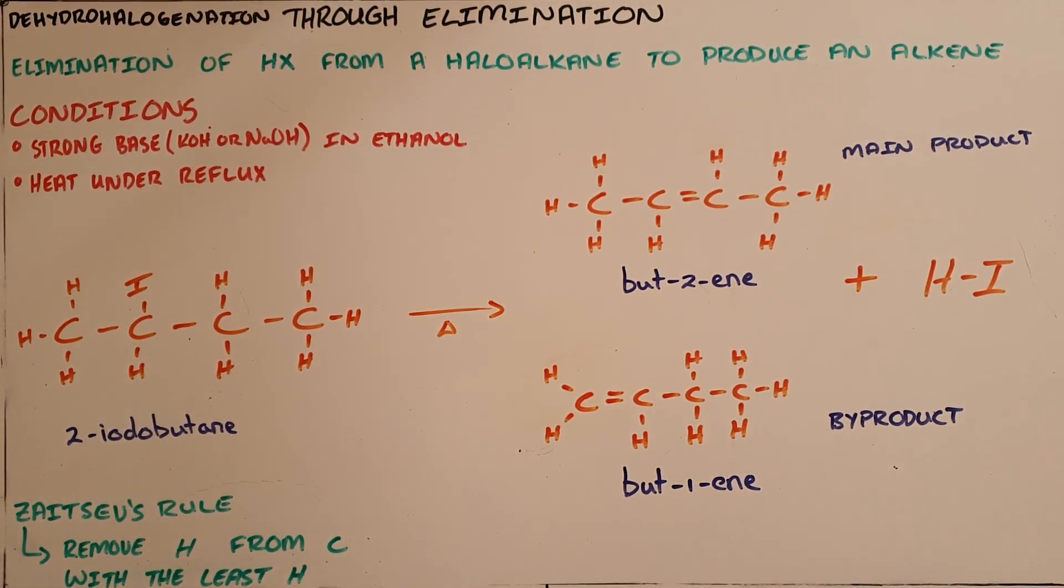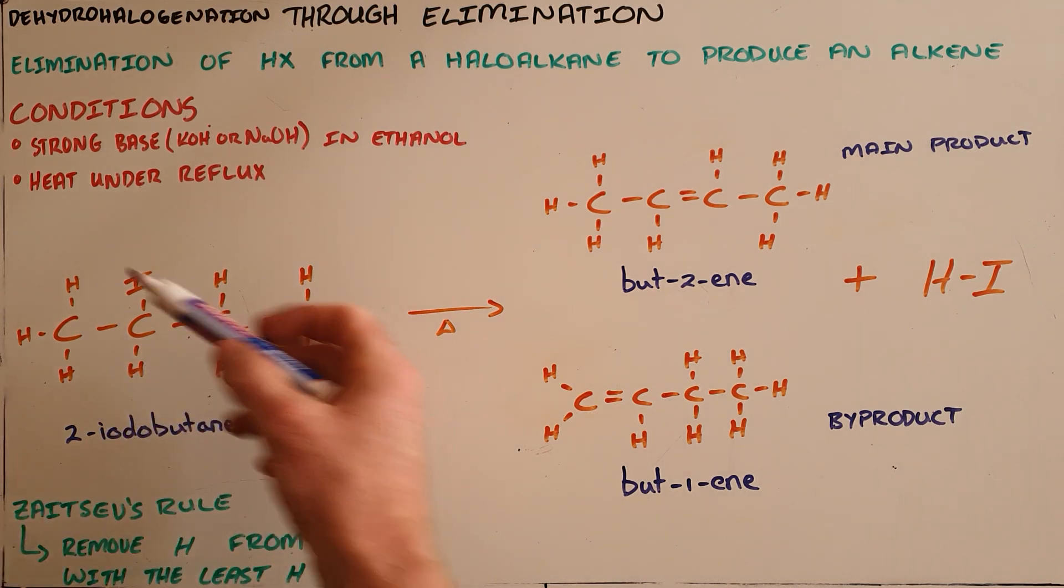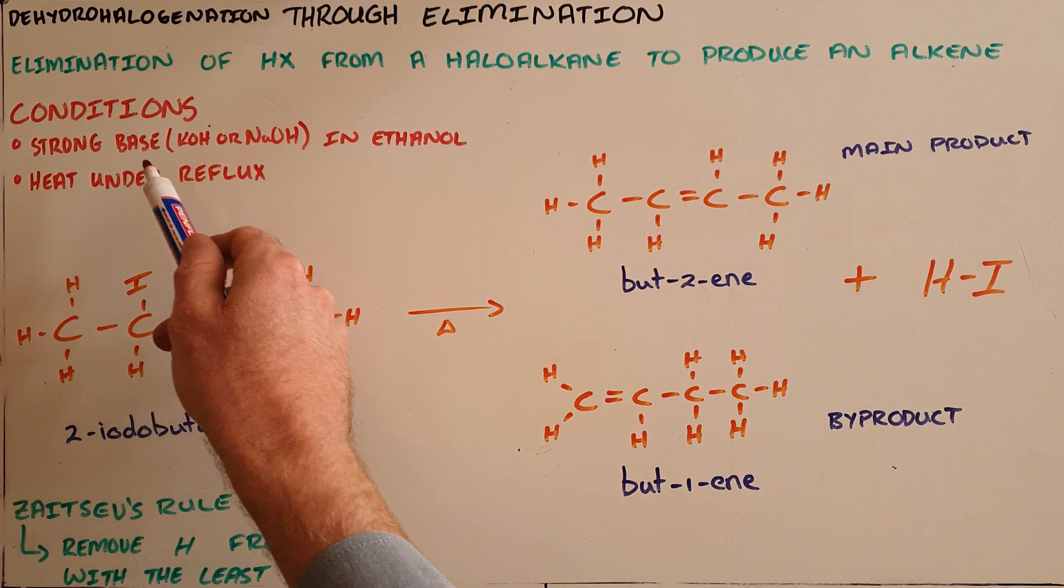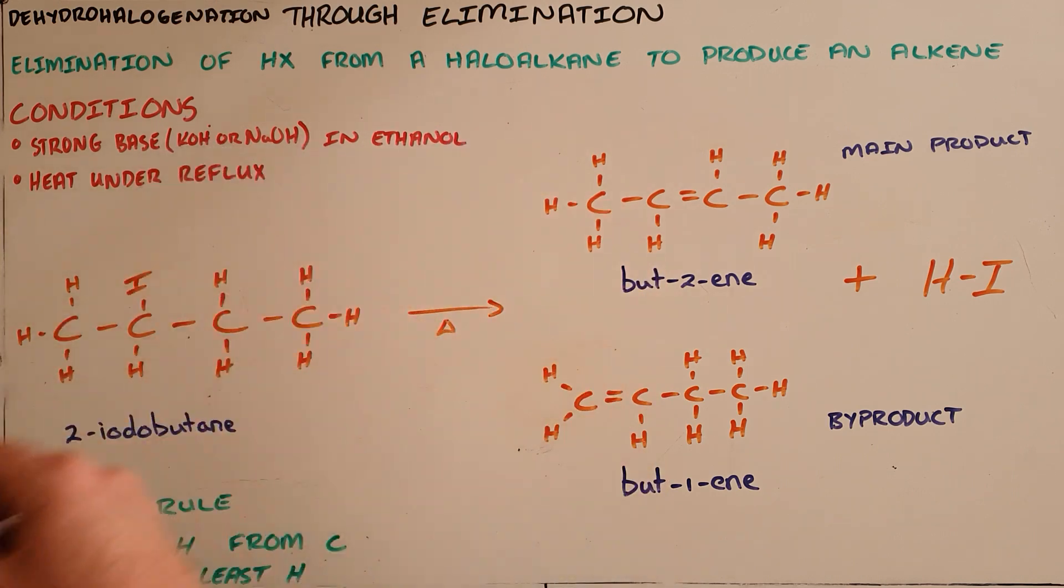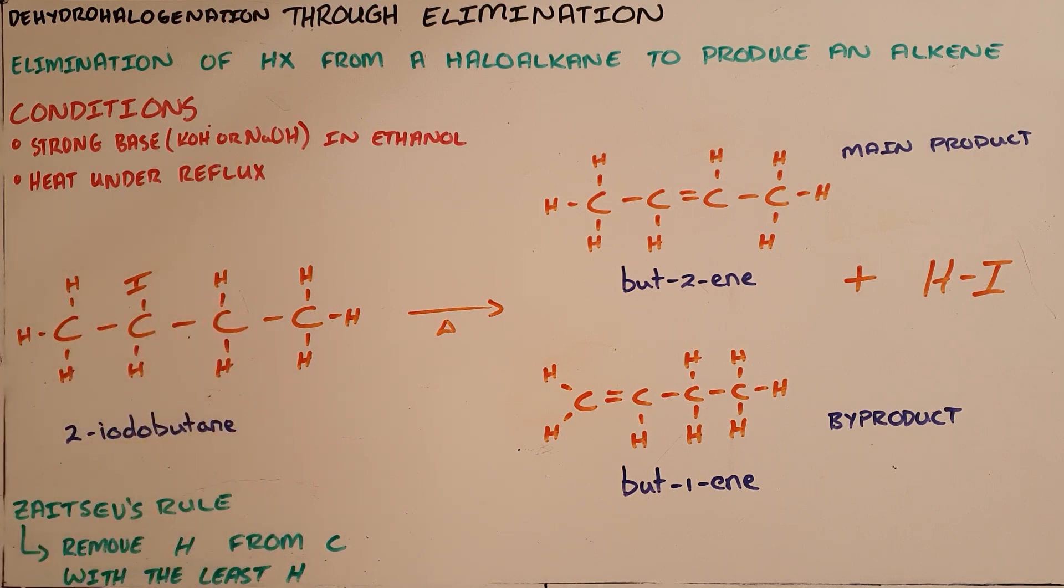Dehydrohalogenation through elimination is the elimination or removal of a hydrogen halide from a haloalkane to produce an alkene. This reaction can only happen on condition that there is a strong base present in ethanol, that strong base being either potassium or sodium hydroxide, and that this solution is heated under reflux.